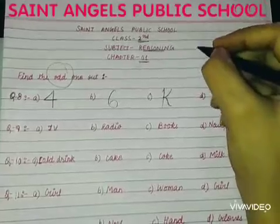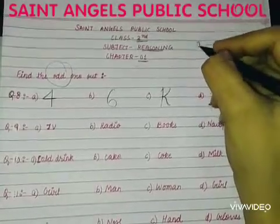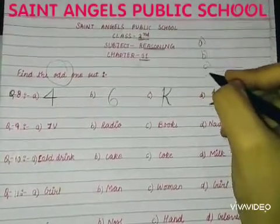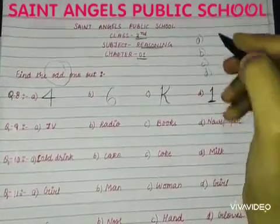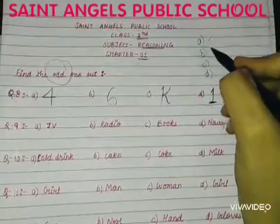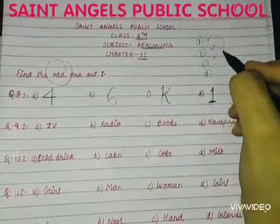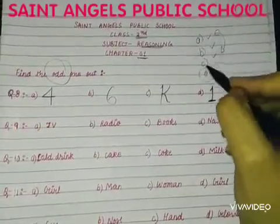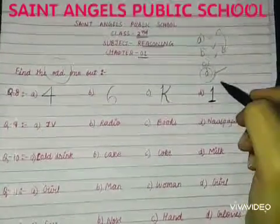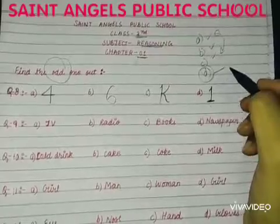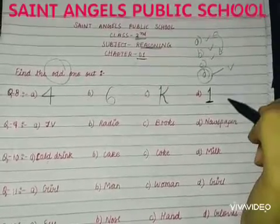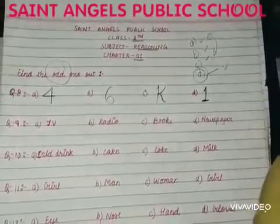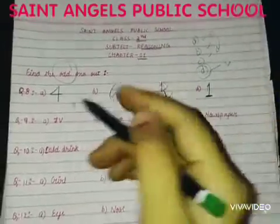In each of the given questions, there are 4 options. 3 options are related to each other and 1 out of 4 options is different. So you have to tick that option. Let's start.